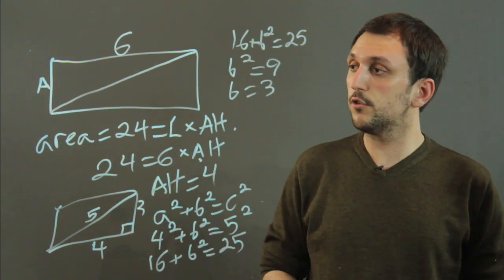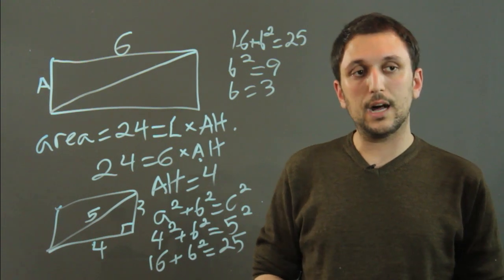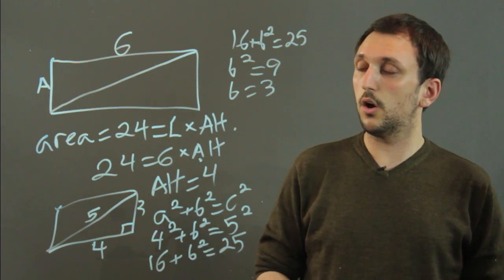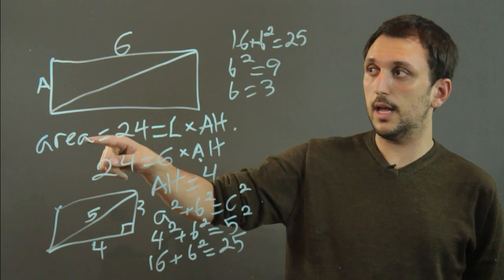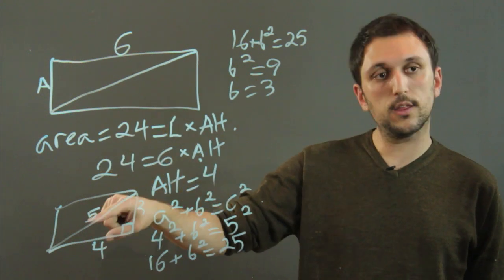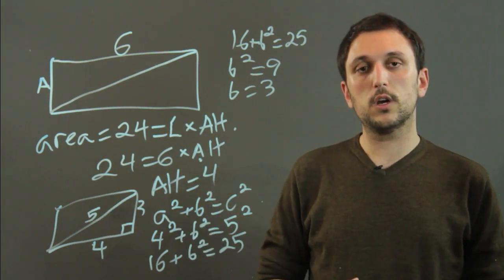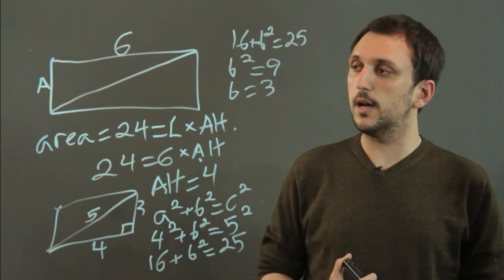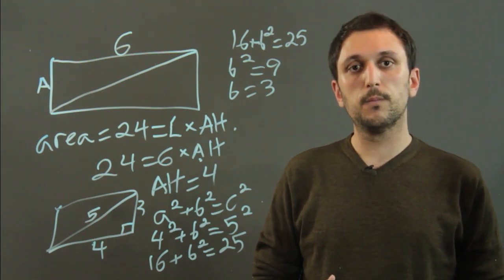So the altitude would be 3. So just to repeat, the two ways to find the altitude of a rectangle are either you know the area and the length or you know the length and the diagonal. So I'm Charlie Kasov and you just learned how to find the altitude of a rectangle. Thanks a lot.